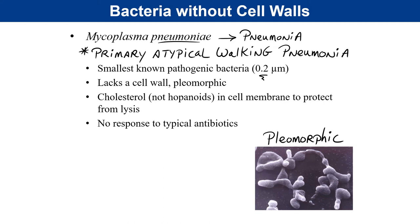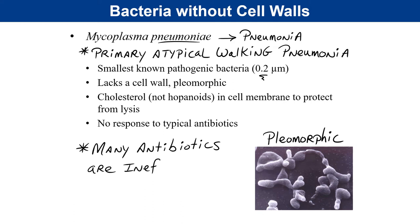Because many antibiotics treat bacterial infections by attacking cell wall synthesis and structure, treatment of Mycoplasma pneumoniae requires antibiotics that take a different course of action. Penicillins and all their derivatives, as well as cephalosporins — typical respiratory tract antibiotics — will have absolutely zero effect on mycoplasma since they target the cell wall.